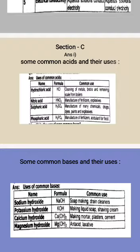Calcium hydroxide is used for making mortar, plaster, or cement. Last, we have magnesium hydroxide used as an antacid to neutralize stomach acidity.